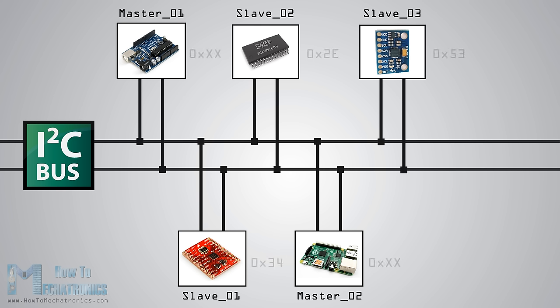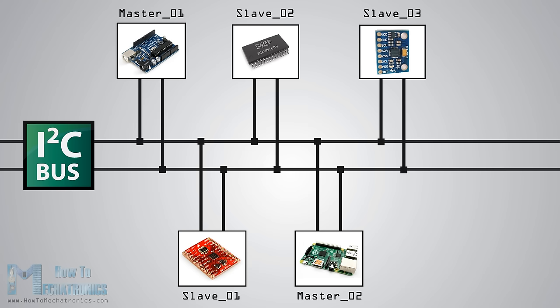Each device has a preset ID or a unique device address so the master can choose with which device it will be communicating. The two wires or lines are called Serial Clock or SCL and Serial Data or SDA. The SCL line is the clock signal which synchronizes the data transfer between the devices on the I2C bus and is generated by the master device. The other line is the SDA line which carries the data.